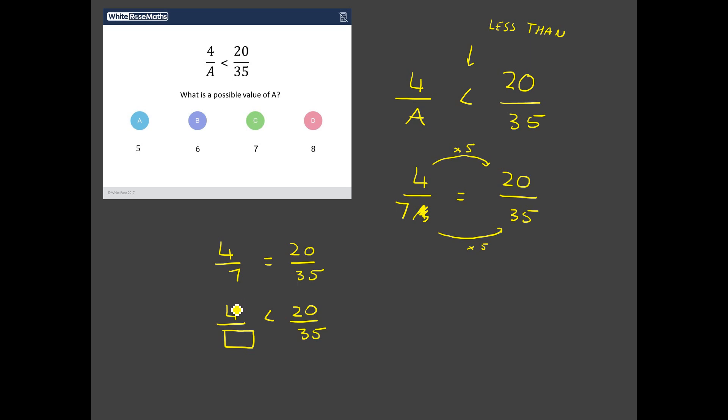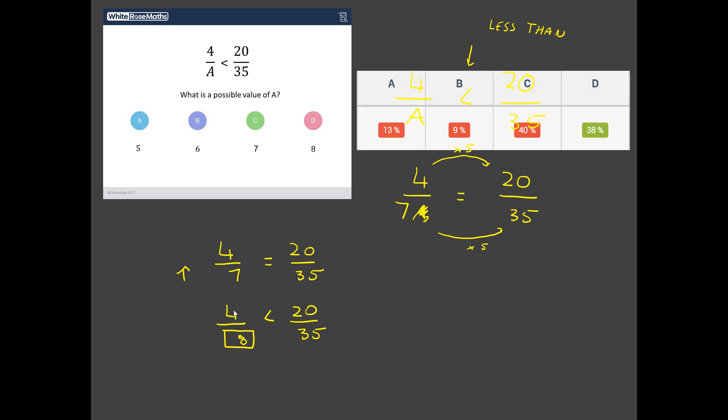But that's not our answer. Because what we want is 4 over something is less than 20 over 35. So how do we make a fraction smaller? What do we do to the denominator to make a fraction smaller? Well, if you think about denominators being the amount that you share something between. If you want to end up with a smaller amount, you need to actually increase the denominator. Think about that. Think if you've got 4 out of 7. And then you've got 4 out of 8, 4 out of 9, 4 out of 10. The bigger this denominator gets, the smaller the amount that you're getting. Because you're sharing it between more people and more things. So actually, if we want this fraction to be less than 20 over 35, we need to increase this denominator. So I think 4 over 8 is a good choice for this one. Have we got it right?